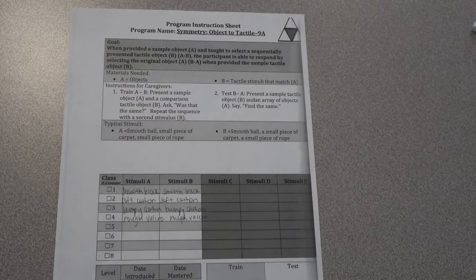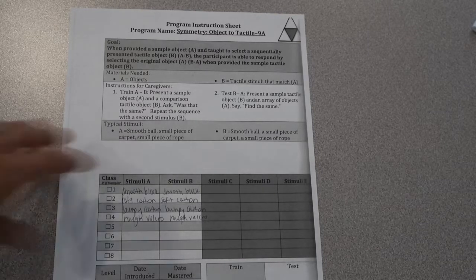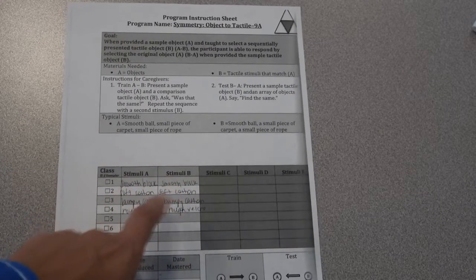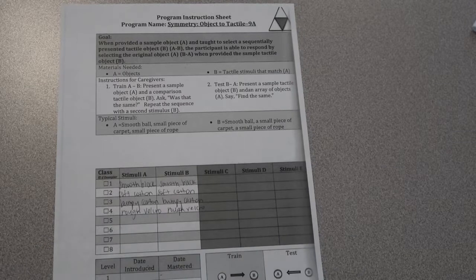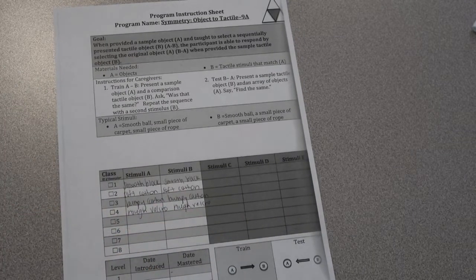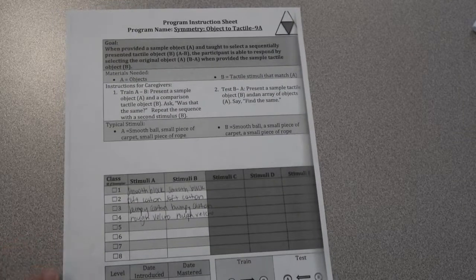So we use eight tissue boxes that we've emptied and all look identical, and inside of them we have two boxes each with a smooth block, each with a cotton ball, each with a bumpy carton which is just like an egg carton that we cut a section out of. Rough Velcro is in another two boxes, and so that'll equal your eight boxes.